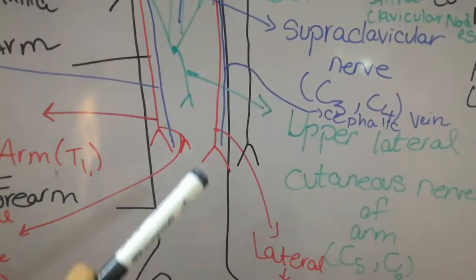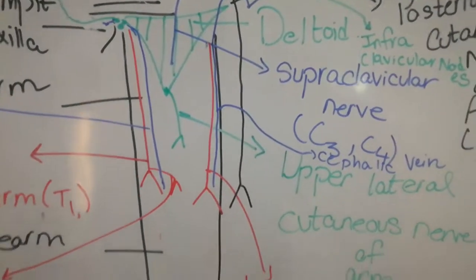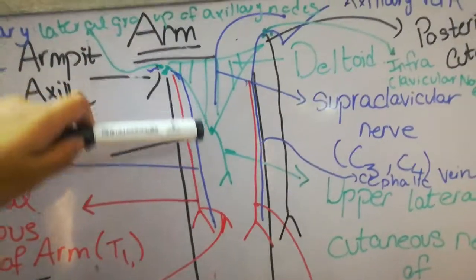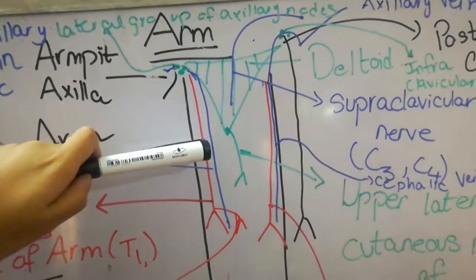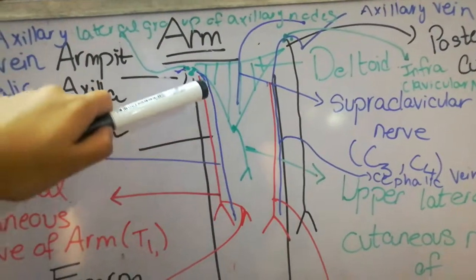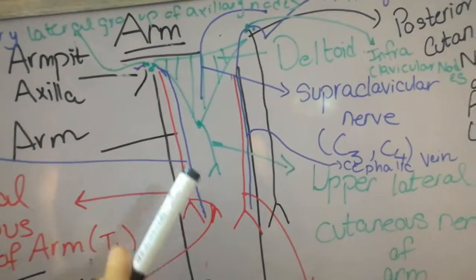Now coming to the medial side, the superficial vein that is present is called the basilic vein. This basilic vein will be draining the lymph from the medial side of the arm. It will reach upward, and on reaching the axilla,